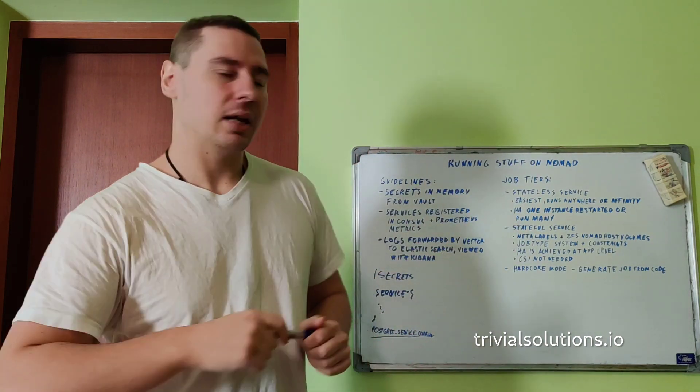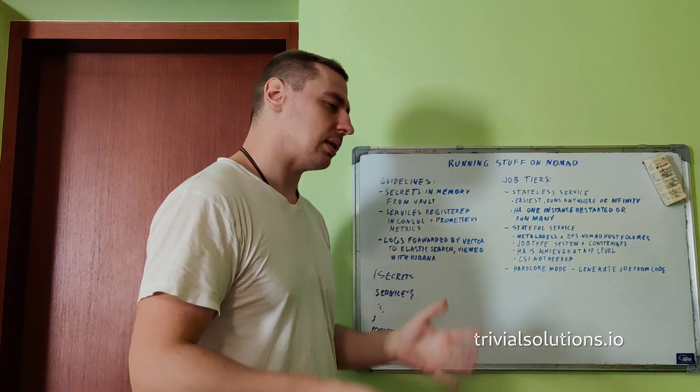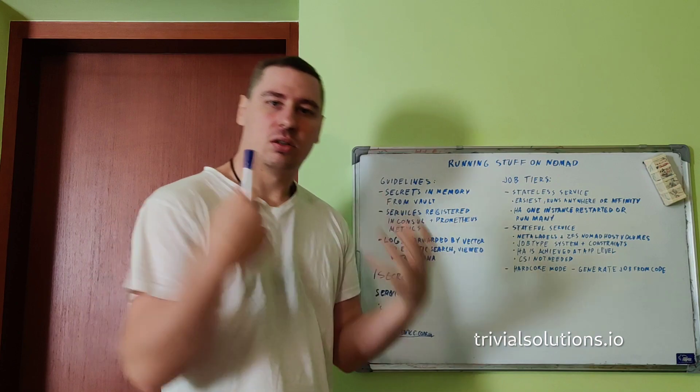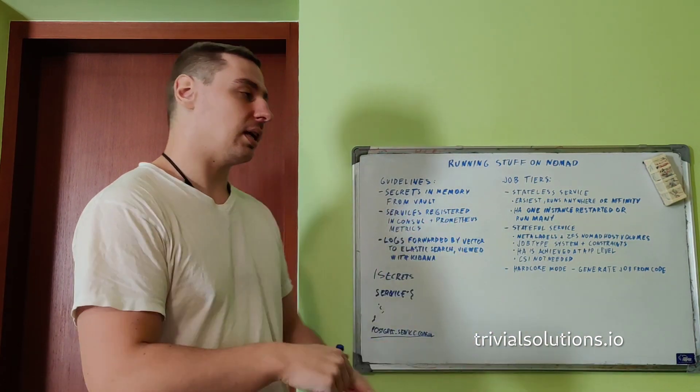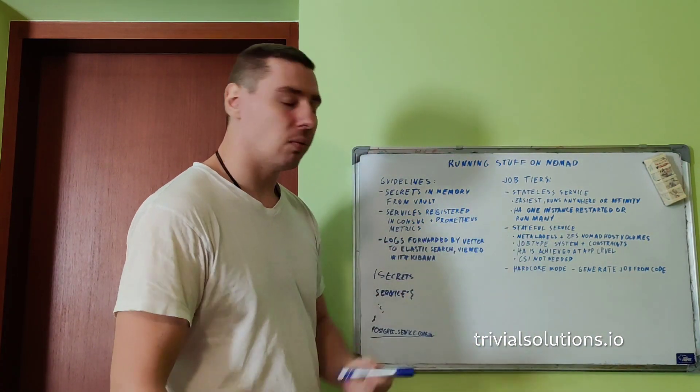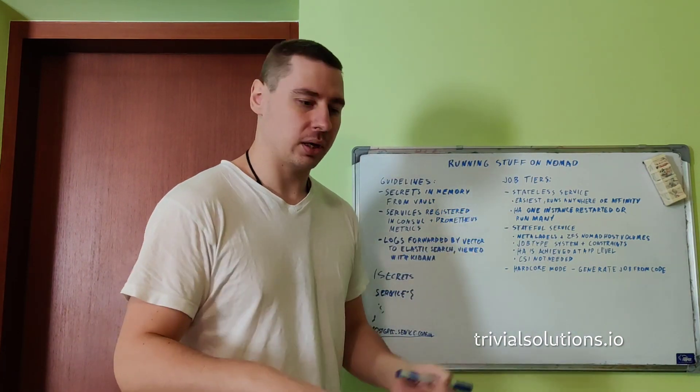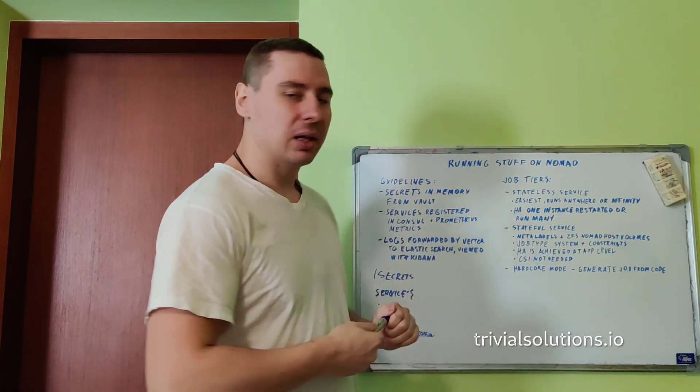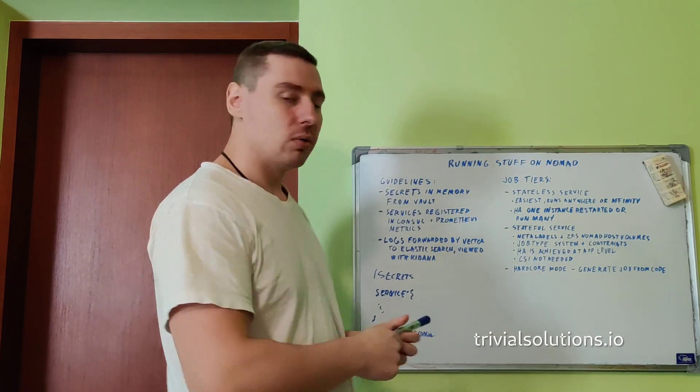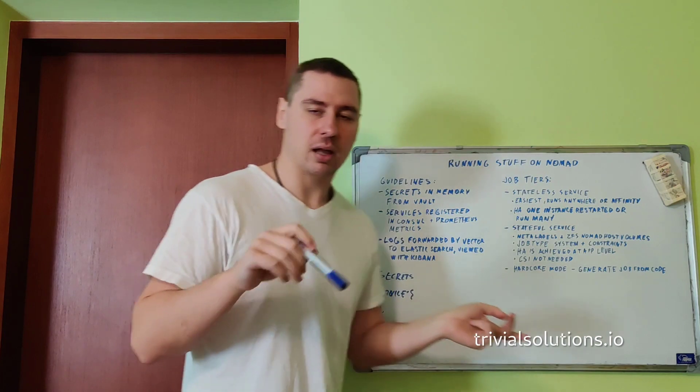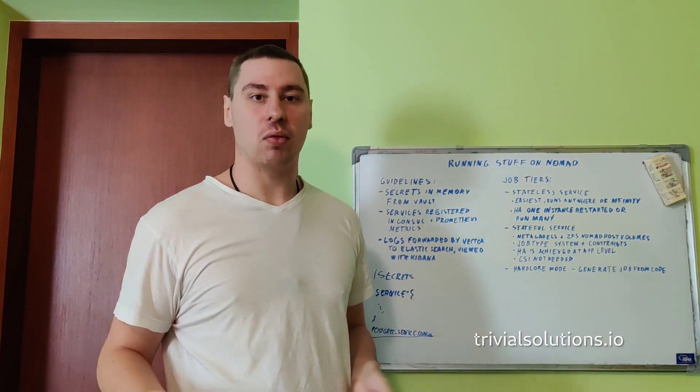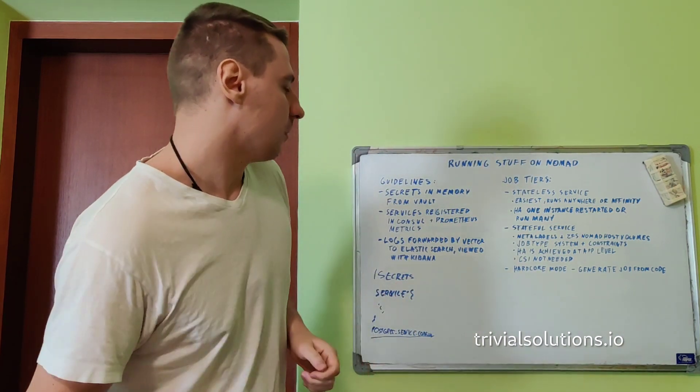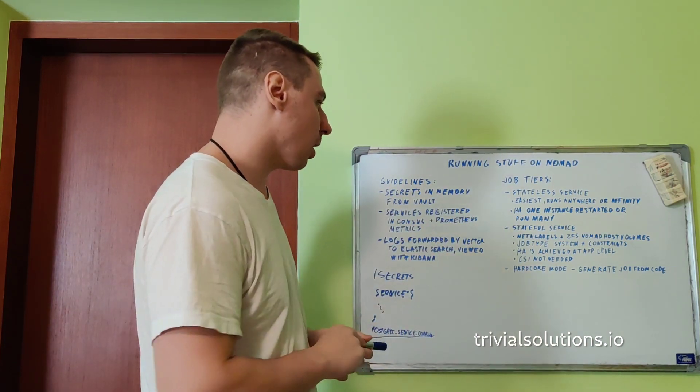Let's talk about high availability. There are types of services that assume they're the only one running, like only one instance. If two instances run, that's bad. So you can only run one. If that server goes down, Nomad sees that server is down and reschedules it somewhere else. That's high availability with pauses until you get rescheduled. Or you can just run more instances of a highly available service, like HAProxy or Nginx load balancer. You can run many at one time.